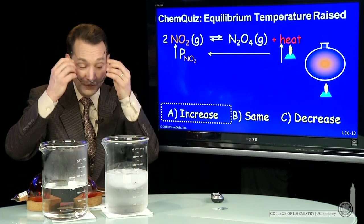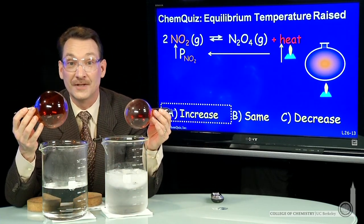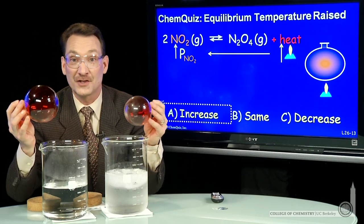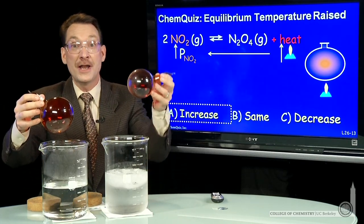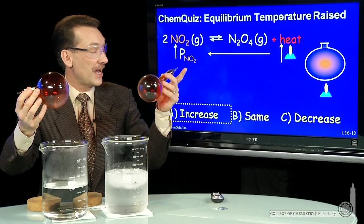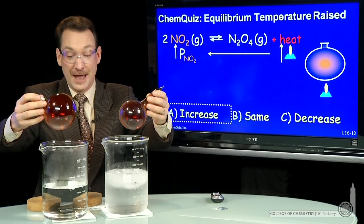I have two flasks here, both with the N2O4 and the NO2 gas. The NO2 gas is the brown gas, the reactant. I'm going to heat one and cool the other to see the effect of temperature. We expect that the hotter, the higher temperature, will be darker. Let's see that happen.